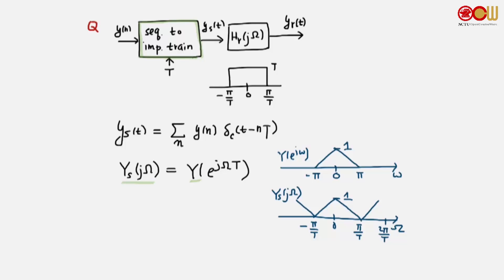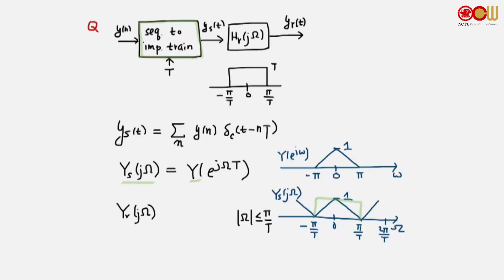Now Y_s is going to be passed through h_r. What does h_r do? h_r will extract the part of Y_s in this frequency range. The reconstruction filter extracts precisely this part and multiplies it by T. So Y_r is simply the part of Y_s for |Ω| ≤ π/T, which equals T times Y_s(jΩ) in that range, and this is precisely T times Y(e^jΩT).